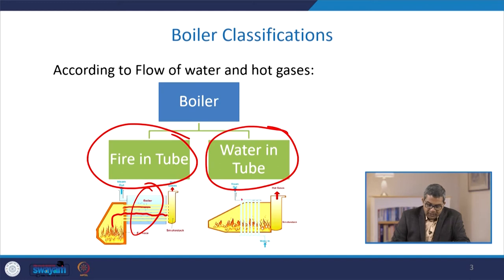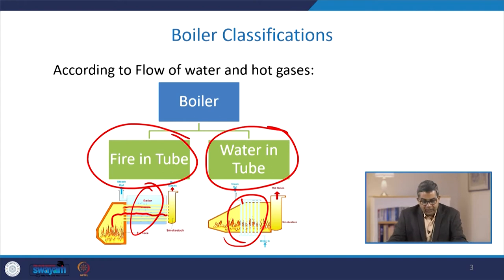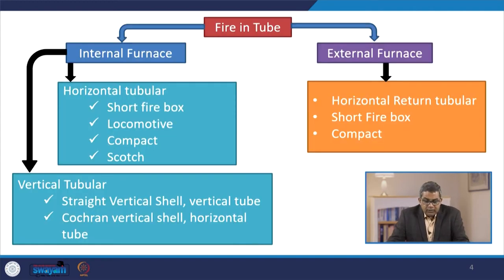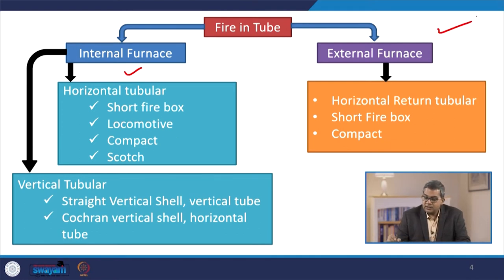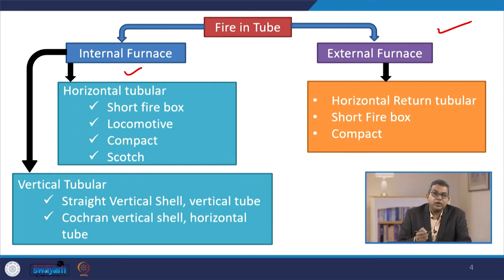In the water-in-tube boiler, the water is inside the tube and the bundle of tubes is surrounded by fire, so heat transfer can take place. Based on the use, one can use any type of boiler. Fire-in-tube type boilers are again subclassified into two categories: internal fired boilers and external fired boilers. Internal fired boilers may be horizontal tubular or vertical tubular.